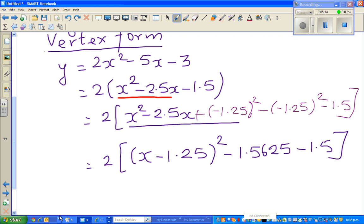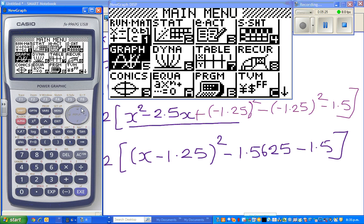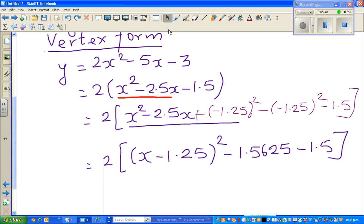So this is the calculator. Type in bracket minus 1.25 squared. That is 1.5625. This minus is already here, so minus 1.5625. So this is equal to 2 times x minus 1.25 squared minus, minus 1.5625 minus 1.5 is minus 3.0625.